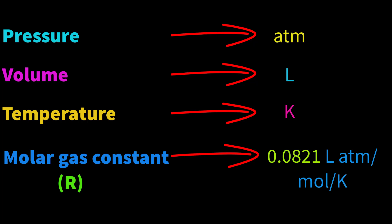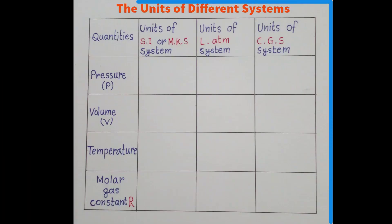However, for the gaseous chapter of physics — first paper, chapter 10 — we have to convert all different units into the units of the SI or MKS system. Look at the chart; this is a chart of the units of different systems.